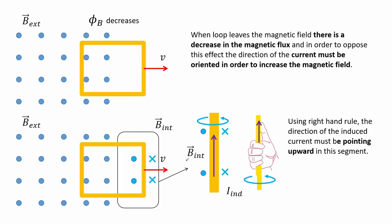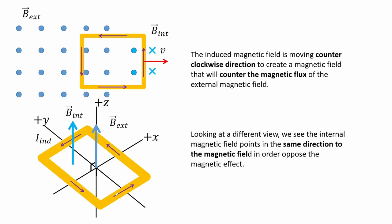When the loop leaves the magnetic field there is a decrease in the magnetic flux, and in order to oppose this effect the direction of the current must be oriented to increase the magnetic field. Using the right hand rule, the direction of the induced current must be pointing upward in this segment. The induced magnetic field is moving counter-clockwise to counter the magnetic flux of the external magnetic field. Looking at a different view, we see the internal magnetic field points in the direction opposite to the magnetic field in order to oppose the magnetic effect.